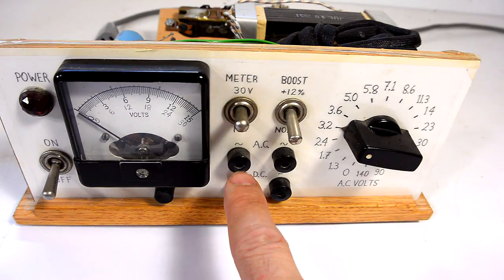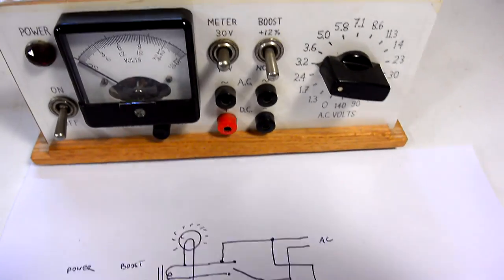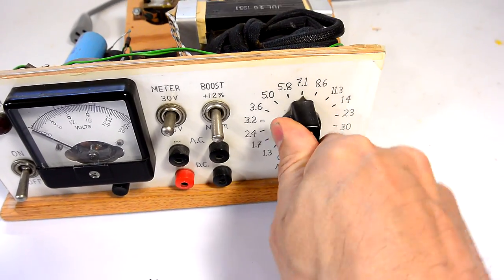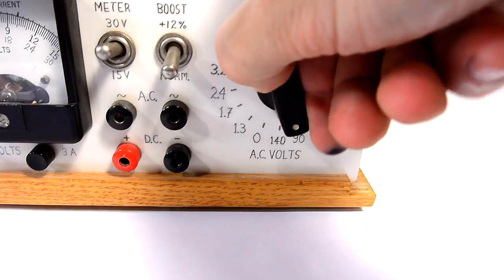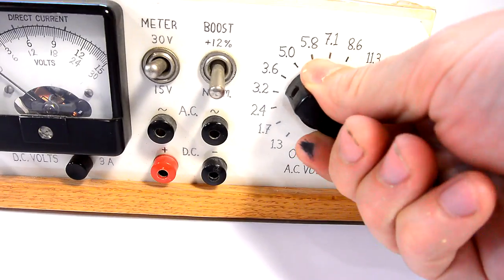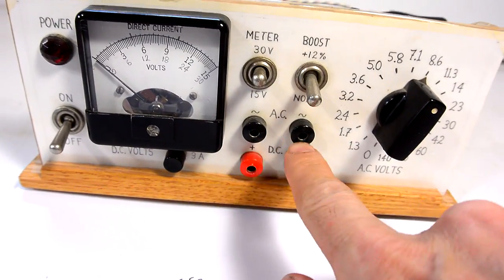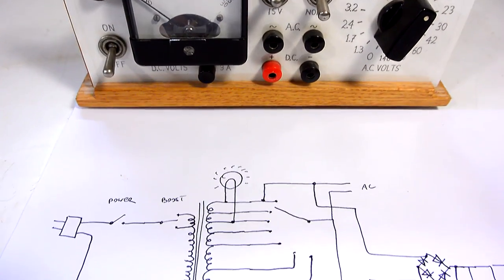If you short those terminals you can easily get 20 amperes out of it. Also cool about it is this transformer with all the taps goes up to 140 volts. So if I want to test something like a little shaded pole motor I can just run that straight off of here without having to plug it into the wall.